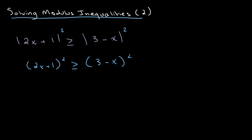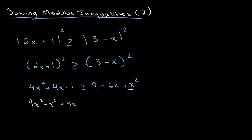All we need to do now is open this up and solve the inequality — and as you've probably noticed, we're going to get a quadratic inequality. This expands to 4x squared plus 4x plus 1, greater than or equal to 9 minus 6x plus x squared. Collecting terms gives us 3x squared plus 10x minus 8, and now we need to factorize it.